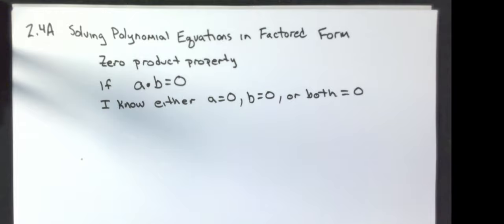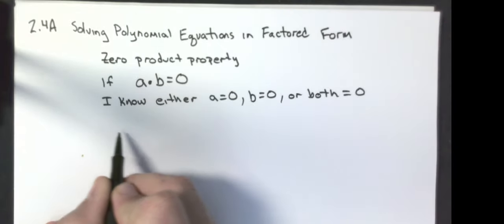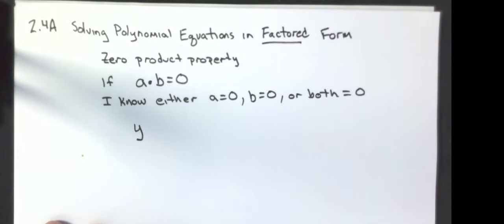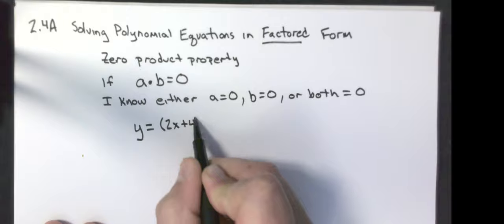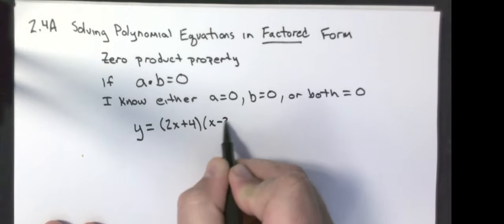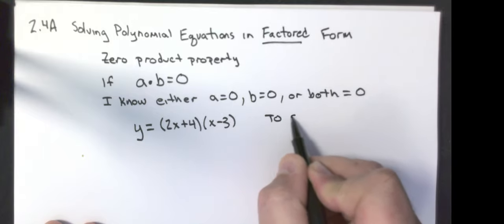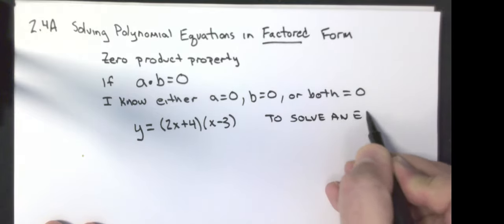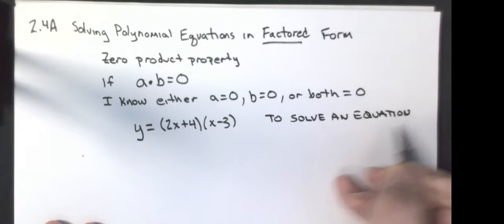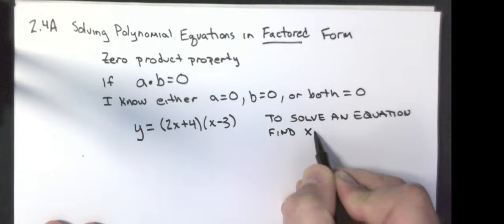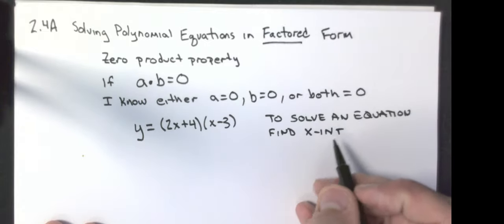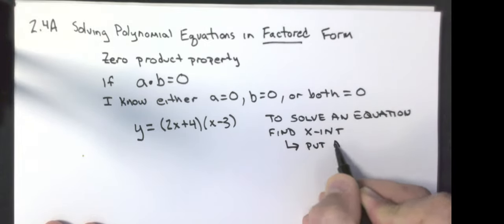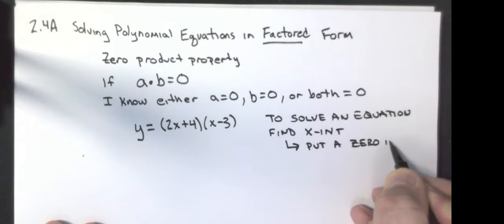We're going to use that to solve some polynomial equations. For example, a polynomial equation in factored form is something that looks like y equals 2x plus 4 times x minus 3. To solve an equation, that is asking us to find the x-intercepts on the graph. To find the x-intercepts, we put a zero in for y.